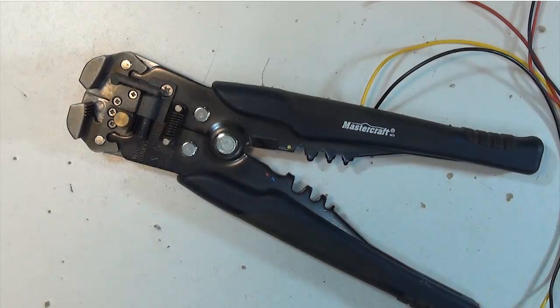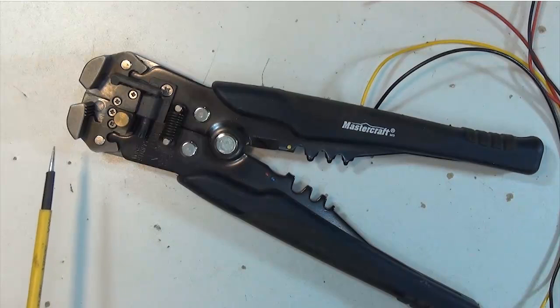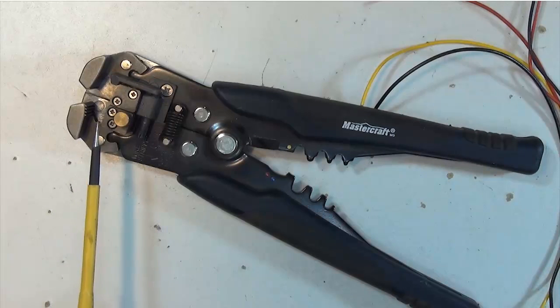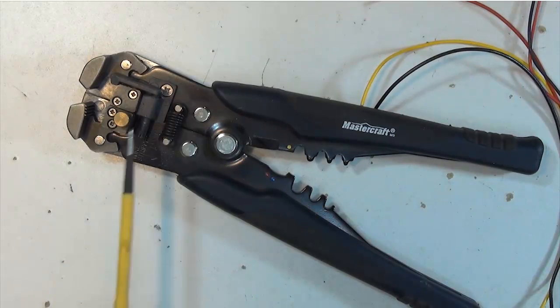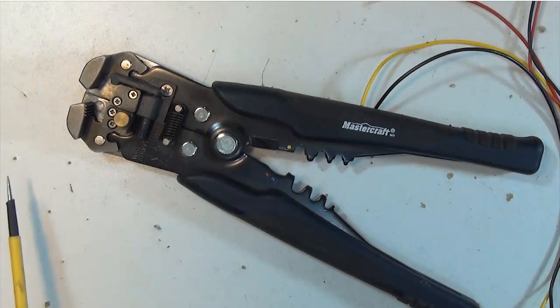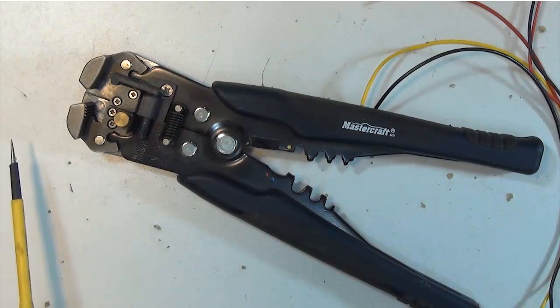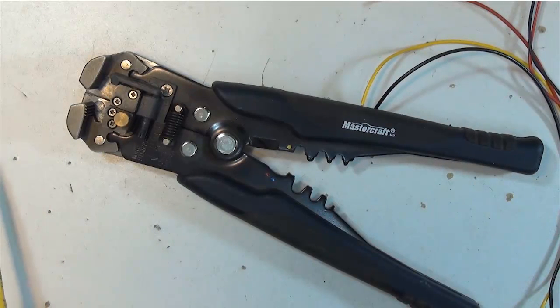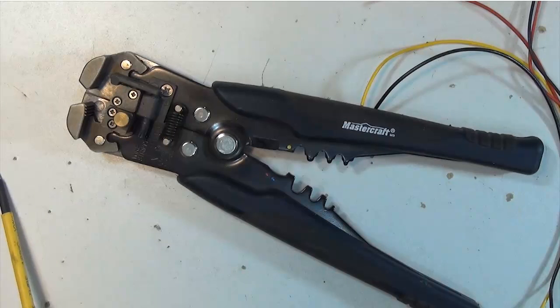This is another type of automatic wire stripper, crimper, and cutter. It works quite well and I've had no problems with it, but it costs a little bit more money. You can often get these for around $20-$25 regular price, and if you watch you can find them for about $10-$12 on sale.